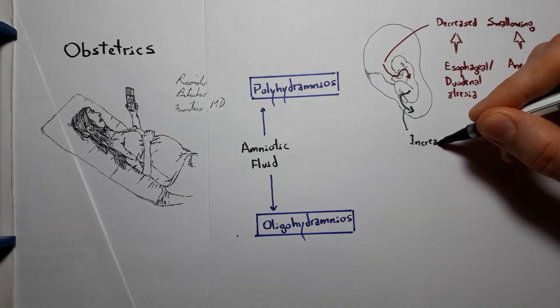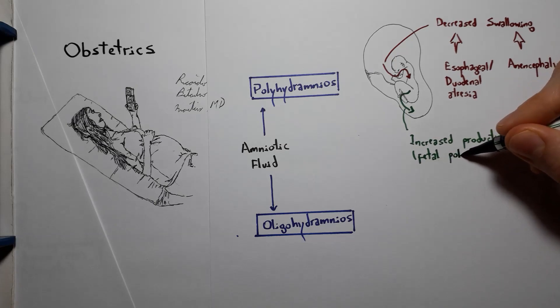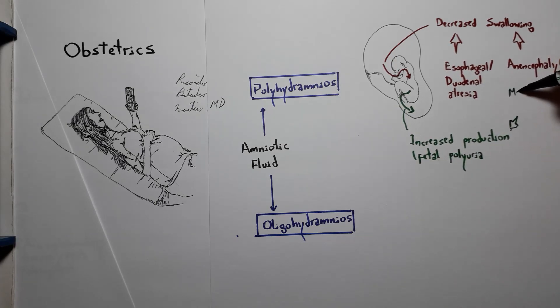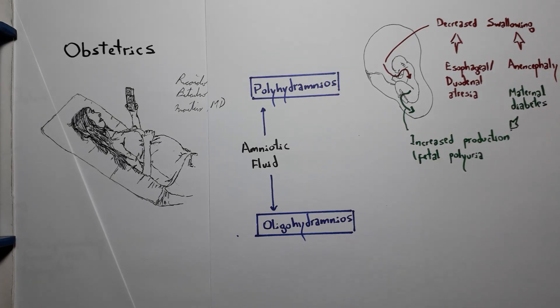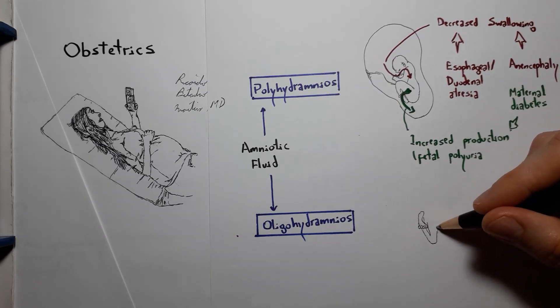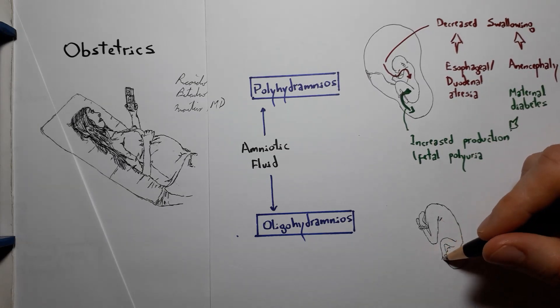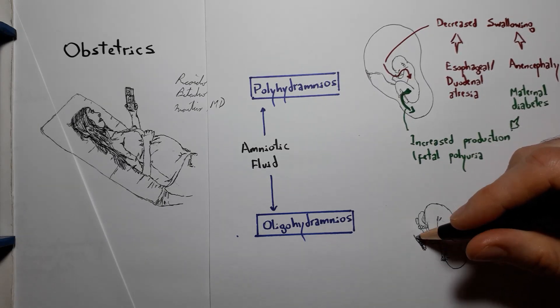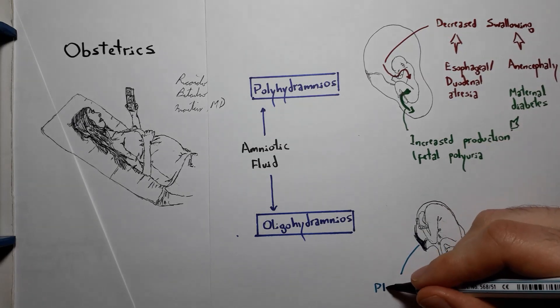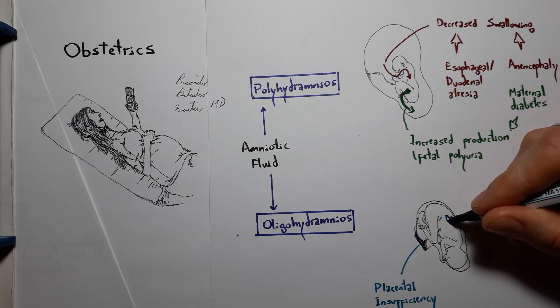It can also be caused by overproduction of amniotic fluid, seen in maternal diabetes, where hyperglycemia causes fetal polyuria. On the other hand, oligohydramnios, the scarcity of amniotic fluid, can be caused by underproduction, such as in placental insufficiency or bilateral renal agenesis.